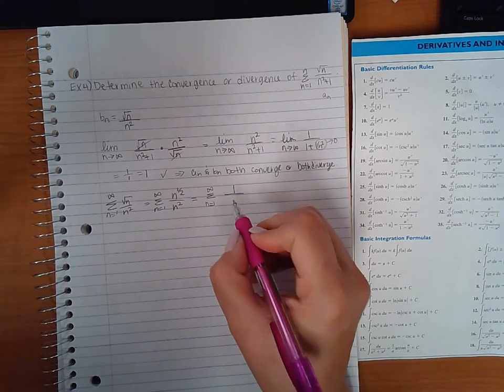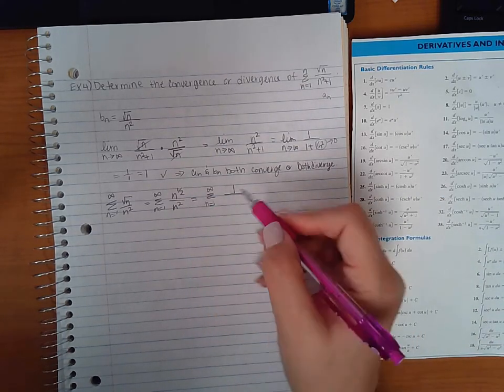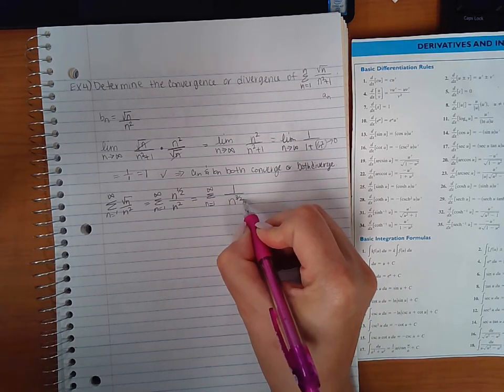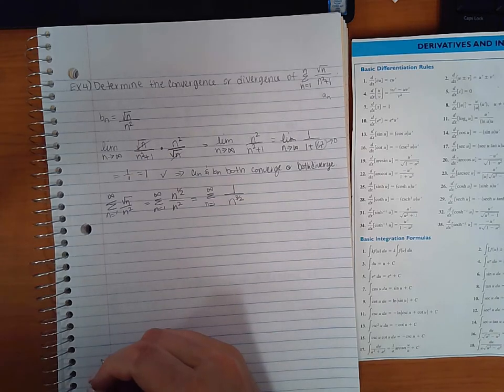So if I were to divide both the numerator and the denominator by n to the 1 half, I'd get 1 here, but here I would have 2 minus 1 half. And 2 minus 1 half is going to be 3 halves. And so that becomes my new power.